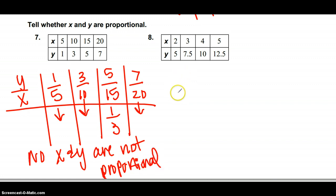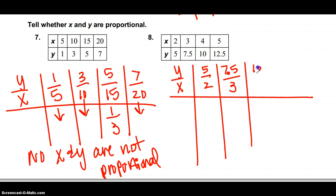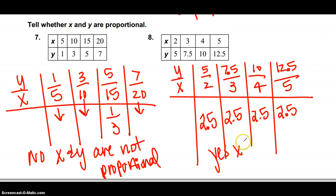Same thing on number 8. You need to put y over x on all four of these values. So this is 5 over 2, this is 7.5 over 3, this is 10 over 4, and 12.5 over 5. And these I just put in the calculator. I put 5 divided by 2 and I got 2.5, 7.5 divided by 3 I got 2.5, same thing here and same thing here. So if all four of these simplified versions are the same number, you can say yes, x and y are proportional.